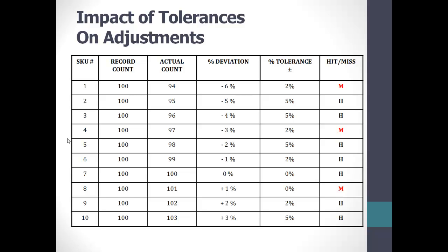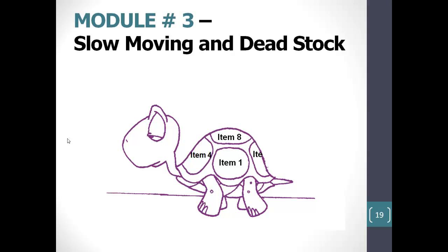To summarize what we've been talking about in this module: although accounting has to use dollars to measure accuracy, if we do that in trying to control our inventory, we'll be using a misleading unit of measure. One particularly important item to measure and act on is dead stock. Let's go into our next module and talk about slow-moving and dead stock.